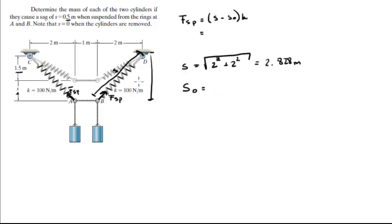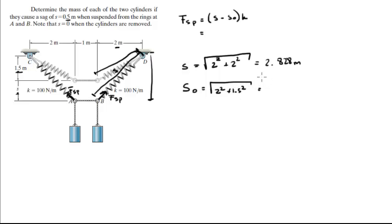S0 is the natural length, given by the square root of 2 squared plus 1.5 squared, which is the square root of 4 plus 2.25, and that comes out to be exactly 2.5 meters.